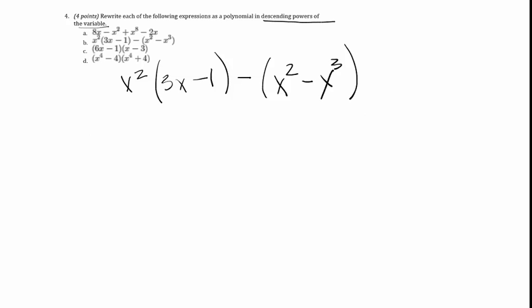Start with the distributive property here and do x squared times 3x to get 3x cubed. Then x squared times negative one is minus x squared.